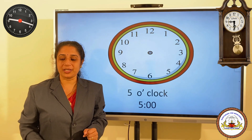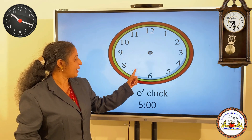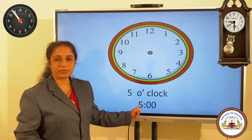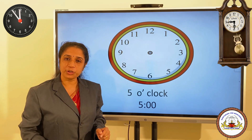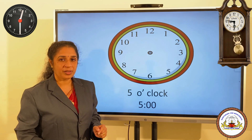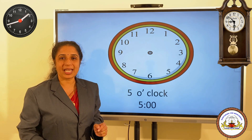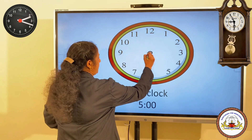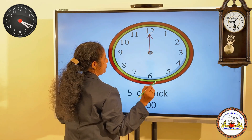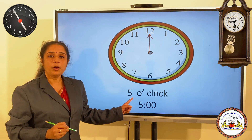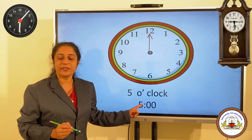Now, I will give you another question. Look at the clock frame. The time given is five o'clock. You should draw the hands of the clock. The minute hand points at twelve, so you can draw the minute hand. The time is five o'clock, so the hour hand points at five.